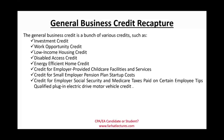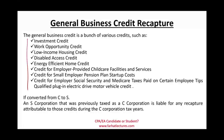Now let's talk about the general business credit recapture. As a C corporation, you might qualify for many business credits — investment credits, work opportunity credit, low-income housing, disabled access credit, and so on. If you convert from a C to an S and you no longer qualify because your status has changed, you have to recapture those credits. An S corporation that was previously taxed as a C is liable for any recapture attributed to those credits during the C corporation tax years. That's all you need to know about general business credit recapture for the CPA exam.